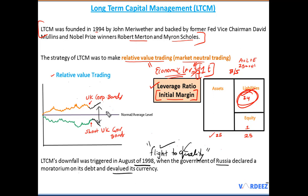This created huge losses for LTCM, amplified by the enormous leverage on these trades. The losses were just one example from their relative value positions — they had many other trades in the same direction. Due to these strategies, the value of LTCM's assets fell by over 40%. Equity dropped from $4.8 billion to just $2 billion in a single month. The fall was so severe it nearly caused a systemic market crash.